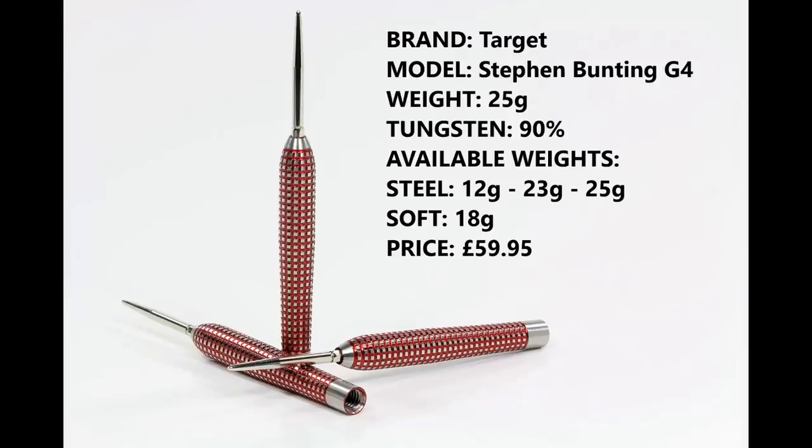I'm reviewing the 25 gram version in 90% tungsten. You can also get them in 12 grams, which is Bunting's weight, 23 grams, and 18 grams in soft tip. They retail for £59.95.